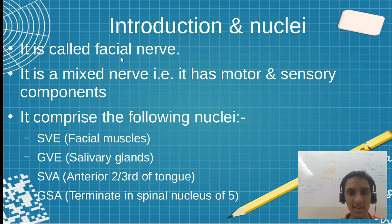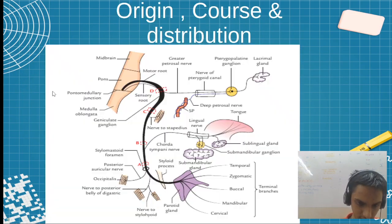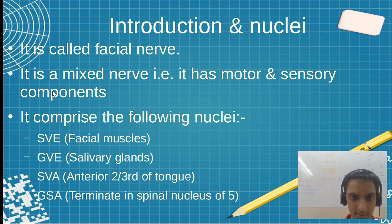The seventh nerve is the facial nerve, obviously associated with the face. This is a mixed nerve with motor and sensory components. The important nuclei include SVE, GVE, SVA, and GSA.